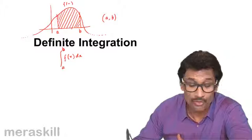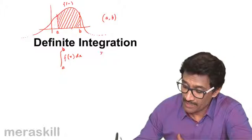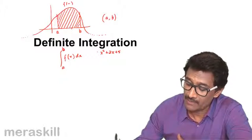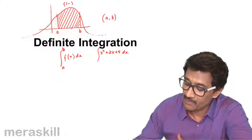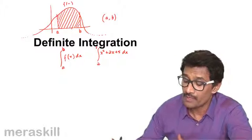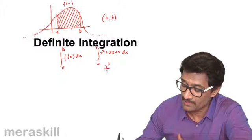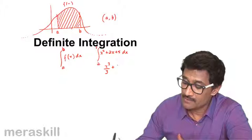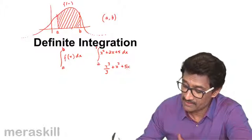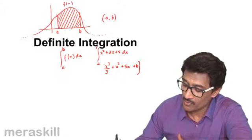That means you find the value of this integral. Suppose there is a function x square plus 2x plus 5 and you want to find the value of this from say 5 to 2. So it's going to be integral of x square which is going to be x cubed by 3 plus 2x square by 2 which is x square plus 5x. This is the integral plus a constant.